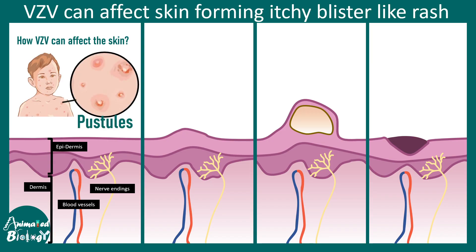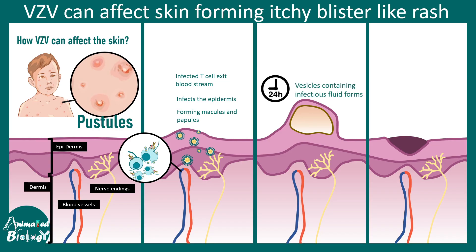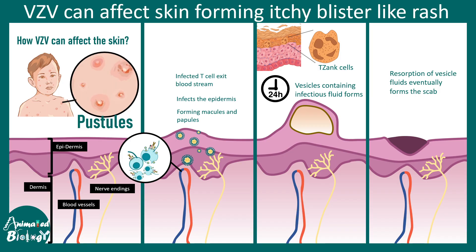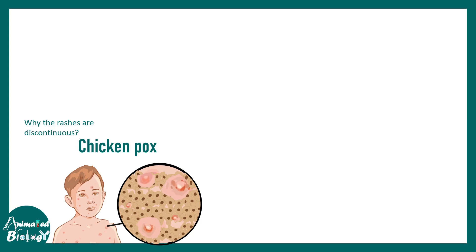Looking at the skin diagram where dermis, epidermis, nerve endings, and blood vessels are labeled: circulating T-cells move near the epidermis region and start infecting the skin, forming rashes. Initially those are maculopapular rashes, and later they become vesicles filled with fluid or pus. There are multinucleated Tzanck cells which are pretty common in these kinds of infections.